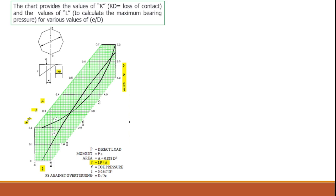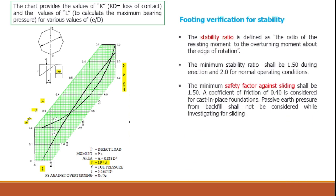The stability ratio is defined as the ratio of resisting moment to overturning moment, computed about the foundation edge. Minimum acceptable stability ratios are typically 1.5 during erection and not less than 2.0 under operating conditions, depending on project specifications or applicable codes.